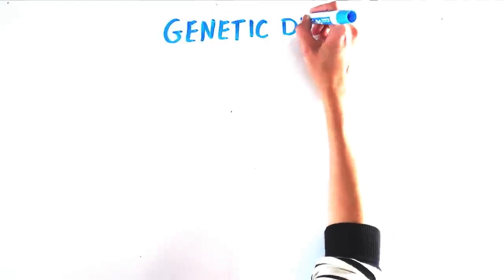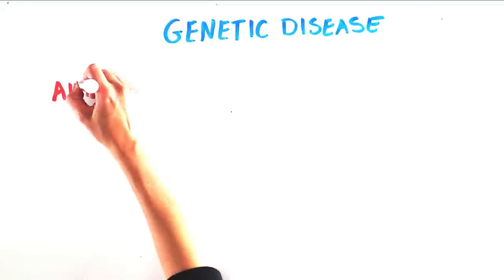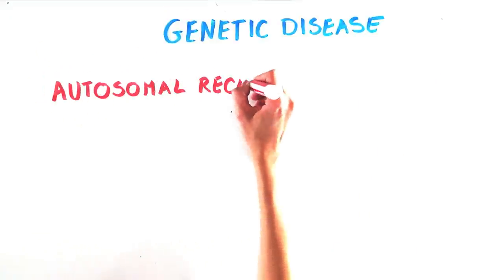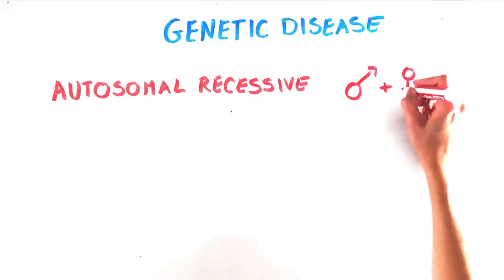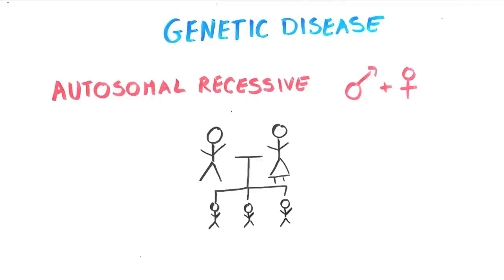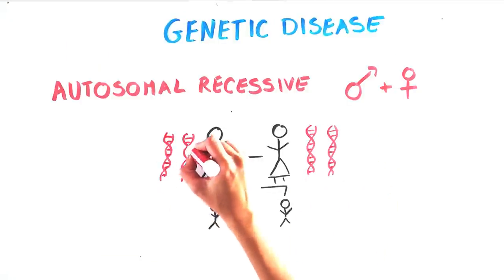Genetic diseases can be passed on in many ways. One common type of genetic inheritance is autosomal recessive, which means both men and women can get the disease, and both parents have to be carriers of the defective gene to pass it on to their child.